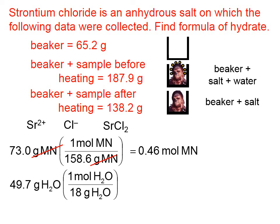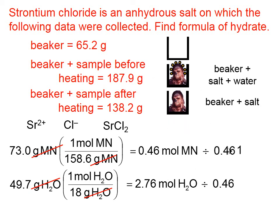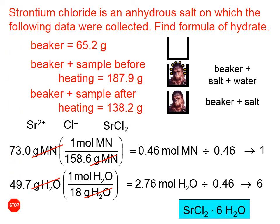We do the same for water. Oxygen has a molar mass of 16 plus two hydrogens at 1 gram each, giving 18 g/mol, for 2.76 moles of water. Step three: divide each by the smallest of those values, which gives us one salt for every six waters. Now we write the formula: SrCl₂ with a dot and six waters. Done.